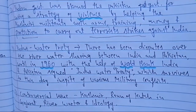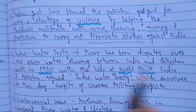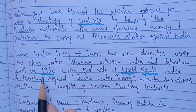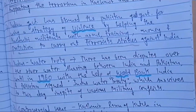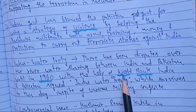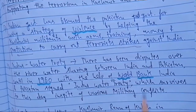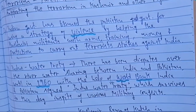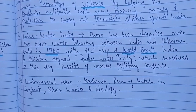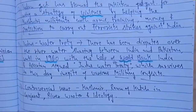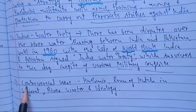Another problem between India and Pakistan is the Indus Water Treaty. There was a conflict between the two countries regarding river water sharing until 1960. Before 1960, there was a dispute over Indus river water, but in 1960, an agreement was signed between India and Pakistan under the mediation of the World Bank. This was called the Indus Water Treaty, which survives to this day. Despite ongoing military conflicts on the LOC and terrorist attacks, this treaty still works.